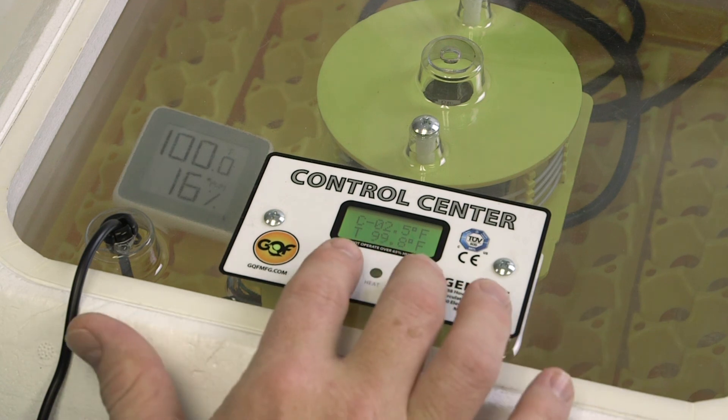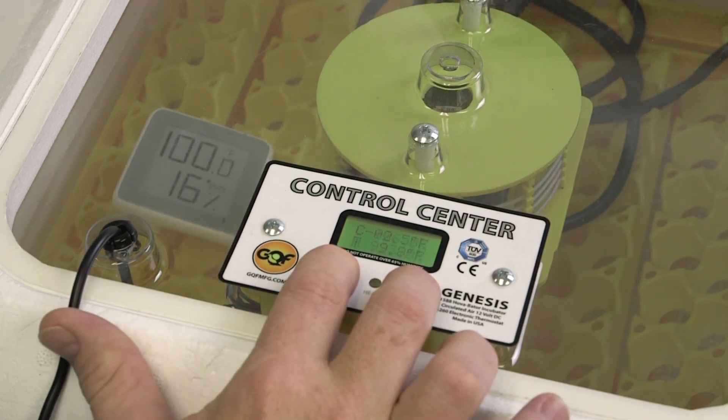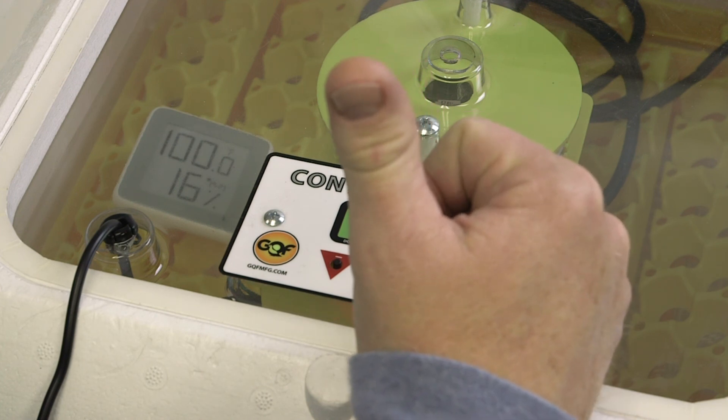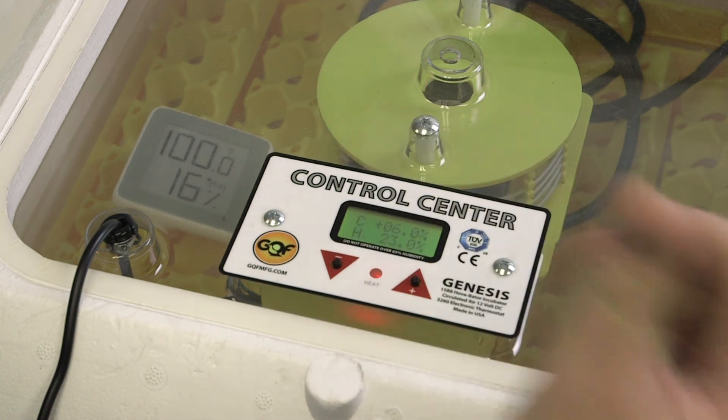Here, in order to advance to the next screen, hold both buttons for a few seconds. When you release it, you can actually calibrate your humidity if you feel the need to do so.